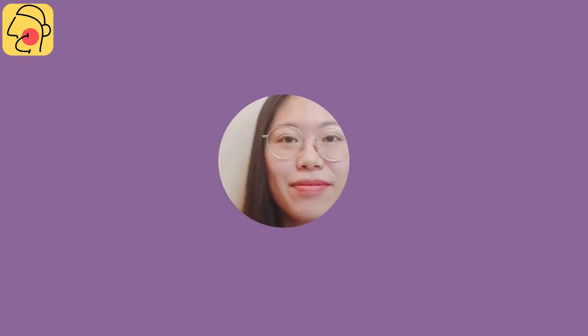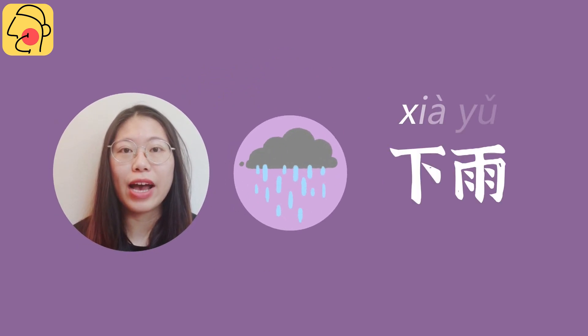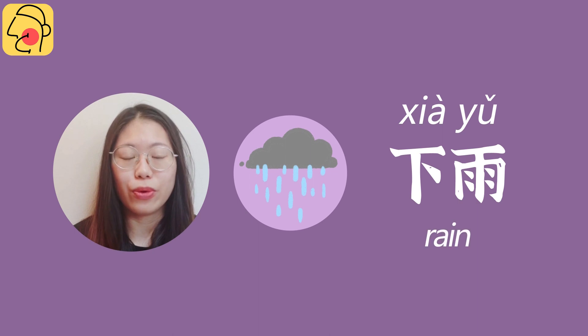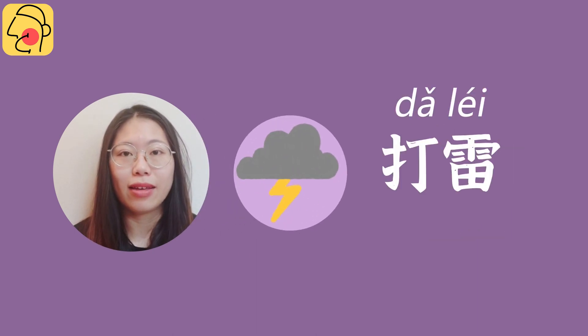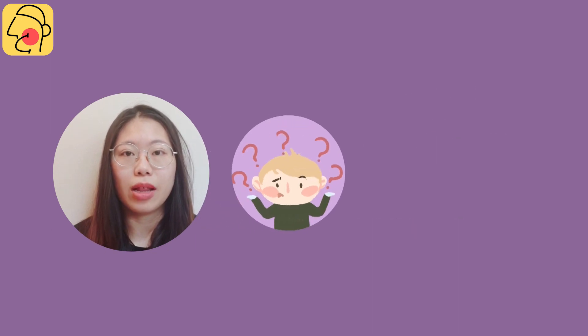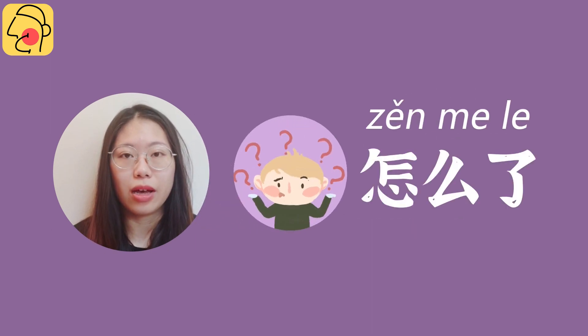各位请看新单词吧！ New words: 下雨 (it's raining), 打雷 (thunder). And: 怎么了 (what's wrong?).